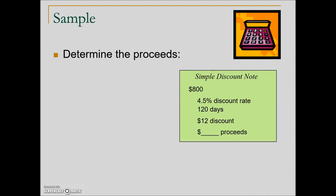Here's the proceeds calculation for the $800 example. We calculated the discount of $12, and proceeds are found by taking the maturity value or face value minus the bank discount. The maturity value is $800, the discount is $12, so the proceeds — the amount of money the individual actually has use of during the 120 days — is $788.